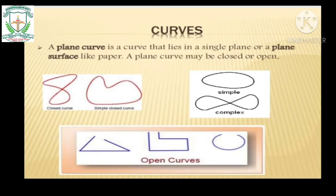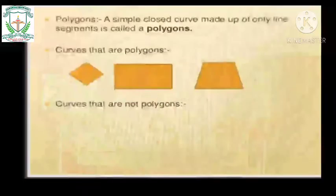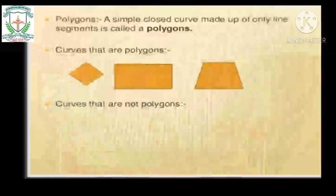Next we will understand what a polygon is. 'Poly' means many — basically a shape with many sides. A simple closed curve made up of only line segments is called a polygon.